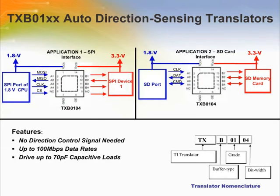The auto-direction sensing translators are popular in applications such as SD memory card interfaces. The majority of SD memory cards operate at 3 volts whereas some of the processors they interface with have lower voltage IOs. TI's auto-direction sensing level shifters, like the TXB0104 (a 4-bit device) and the TXB0108 (an 8-bit device), are popular options for this application. The architecture of the TXB0104 is suitable for driving capacitive loads of up to 70 pF, but is not suitable for driving heavy resistive loads or for use with open drain drivers. The minimum allowable value of the pull-up or pull-down resistor on the IO is 50 kΩ.